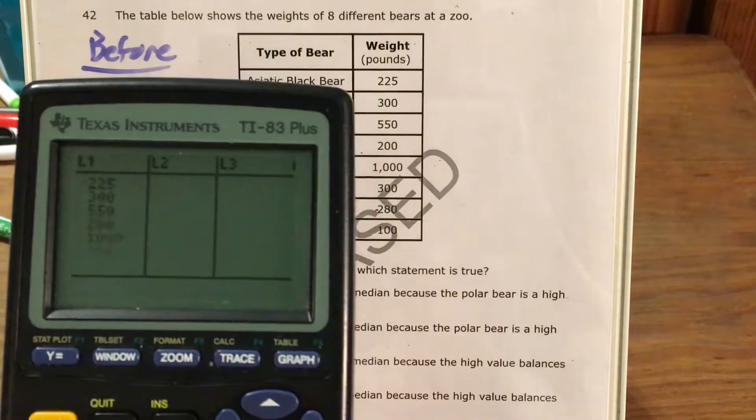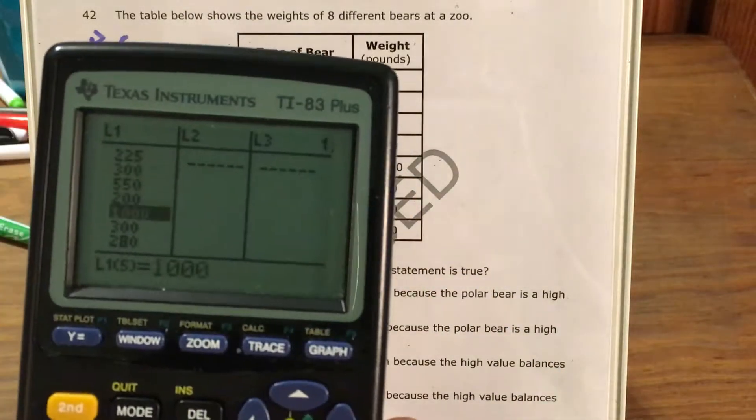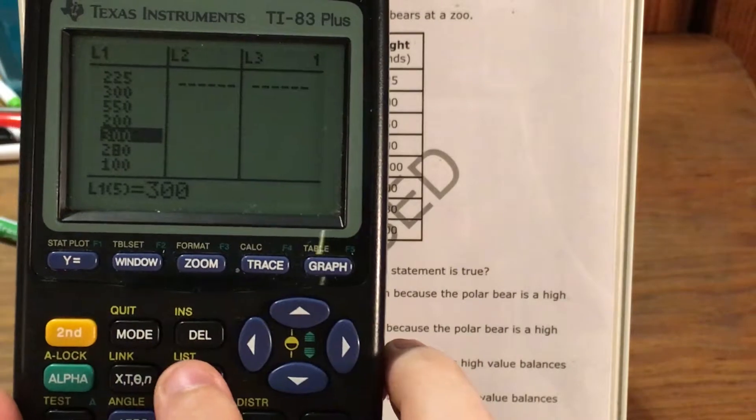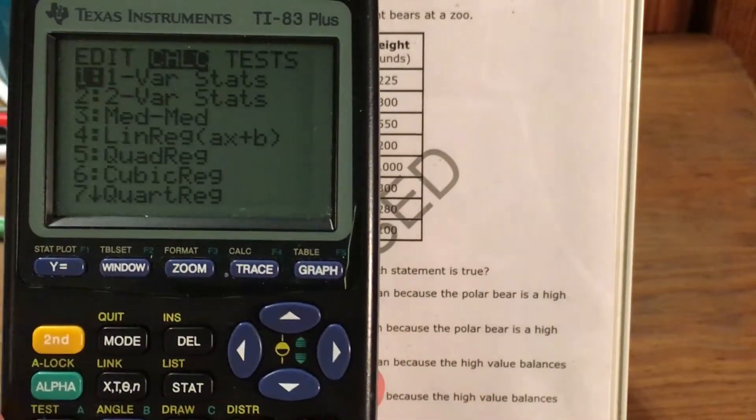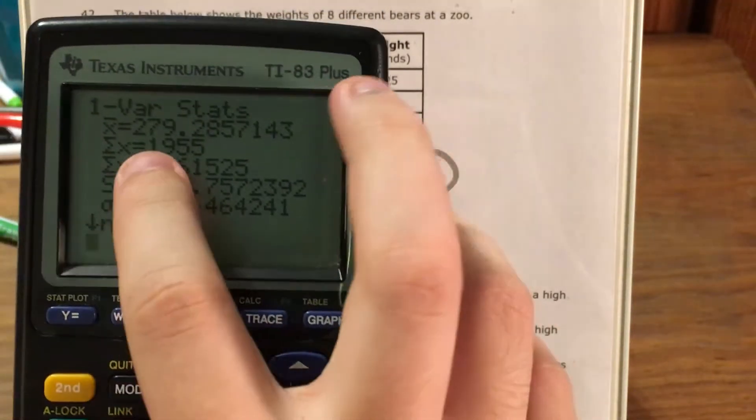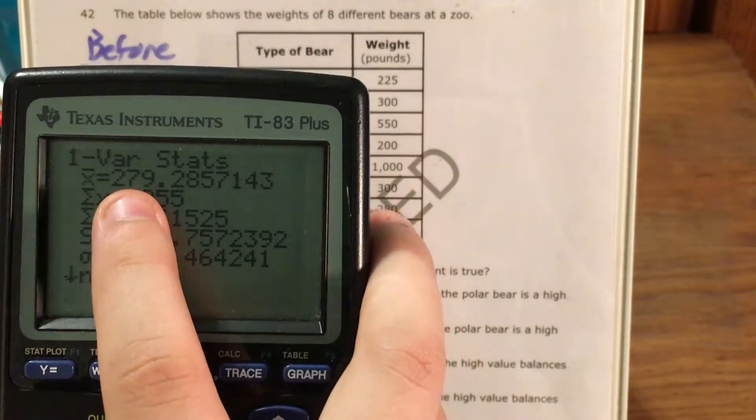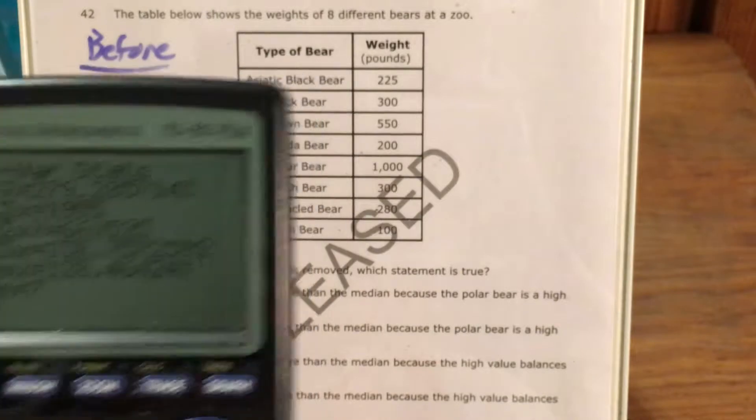So I go to stat, edit, polar bear was a thousand pounds so I find one thousand and just press the delete key. It gets rid of it automatically. Go back to stat, calc, one variable stats, press enter. And so now here's my mean, my new mean, 279.286.